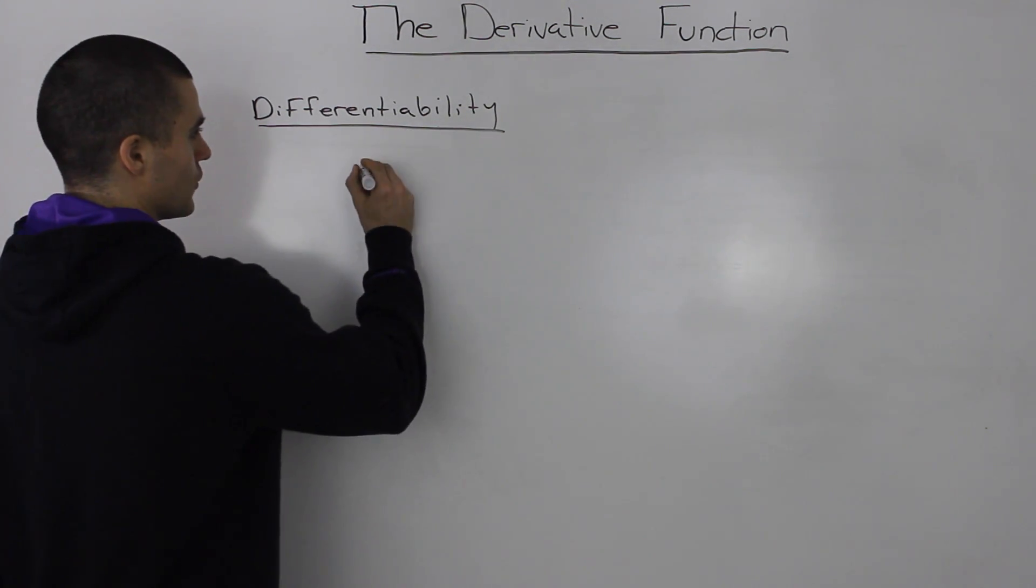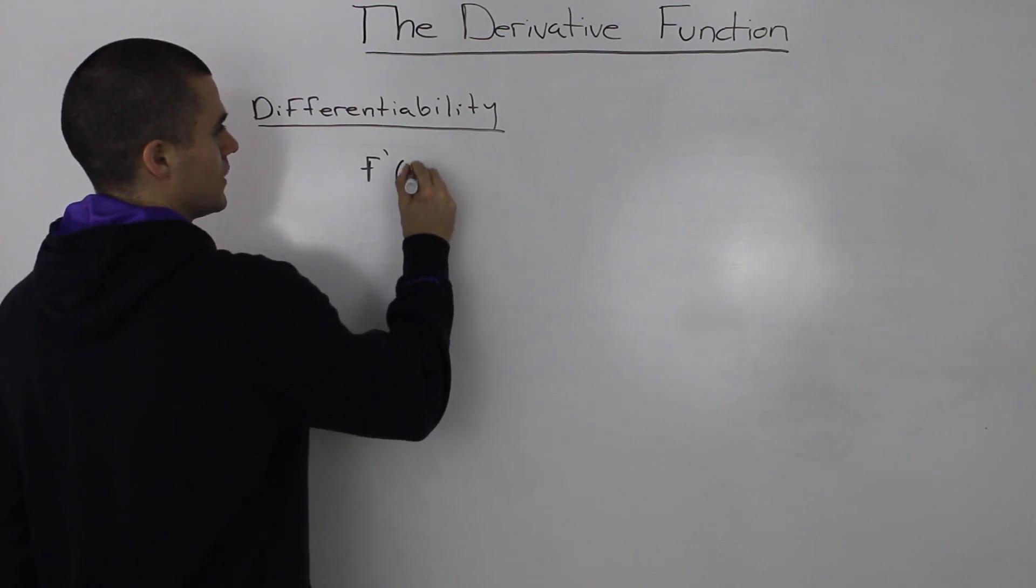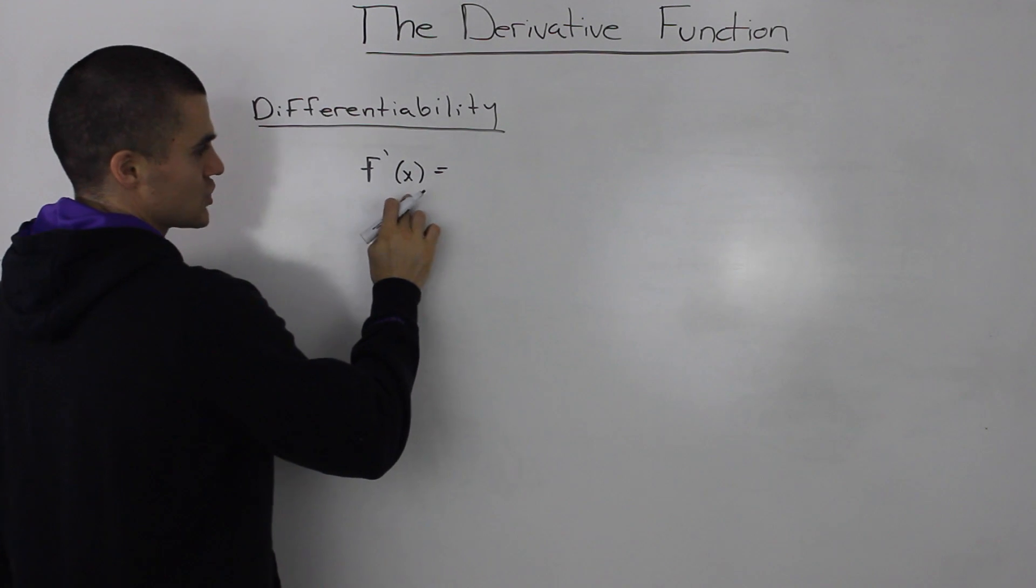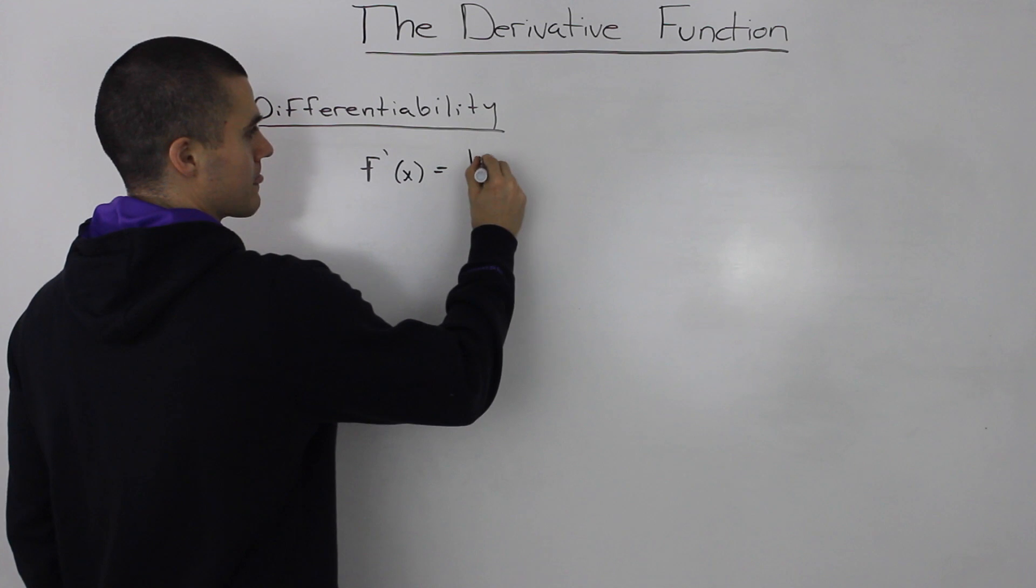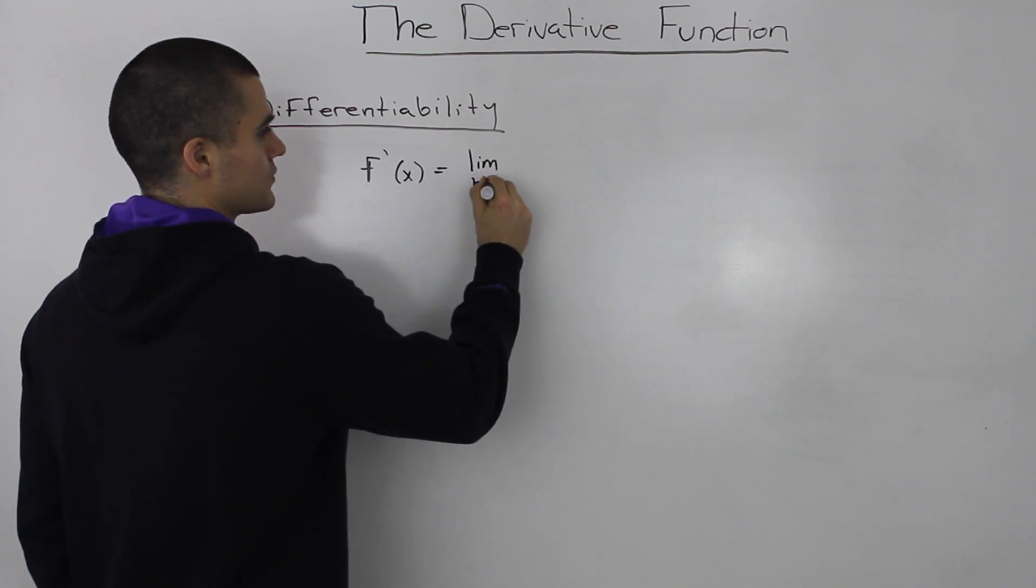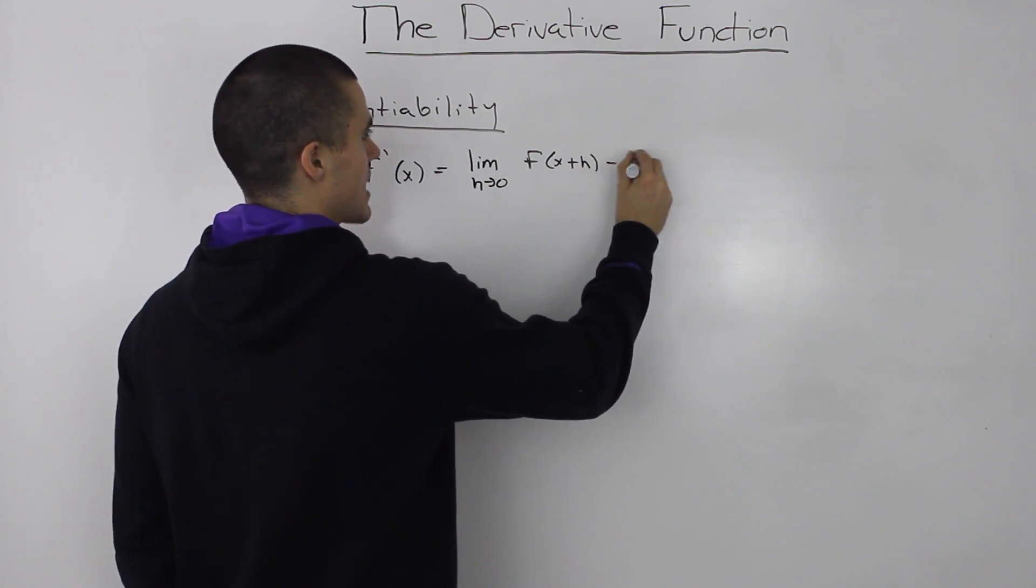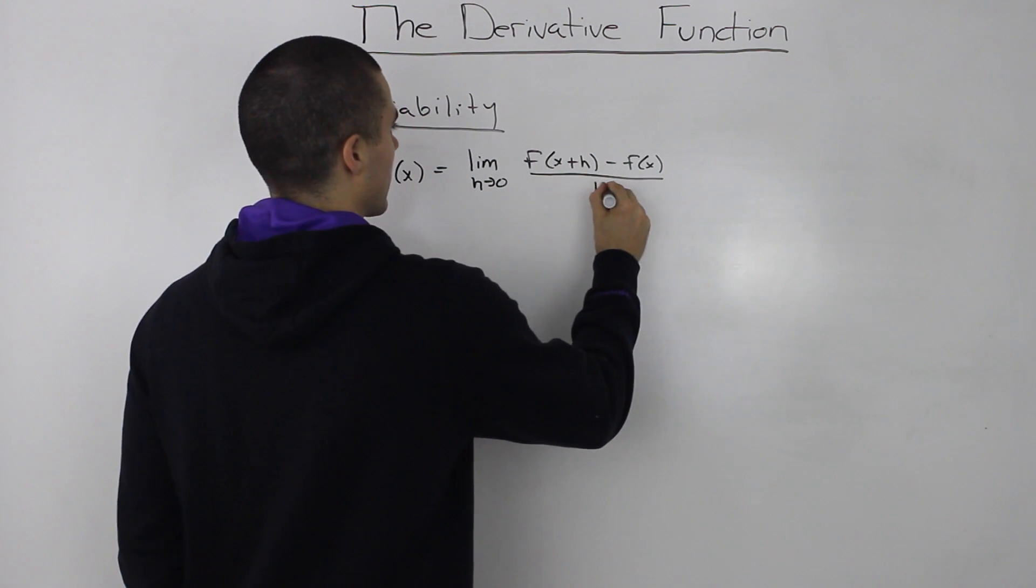As a brief review of what we did in the previous video, we know that the derivative of f(x), or the slope of the tangent of f(x), is equal to this limit of f(x+h) minus f(x) all over h.